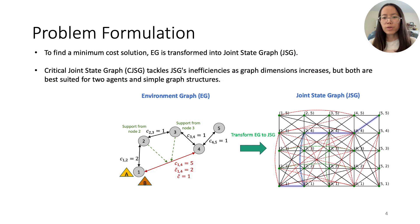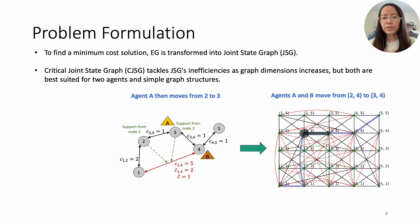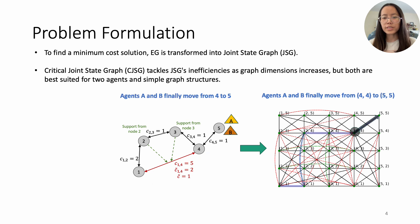To find minimum cost solution, we transform EG to joint state graph called GSG. Another approach is critical joint state graph CGSG, which addresses the computational inefficiency of GSG but is limited to two agents and simple graphs.